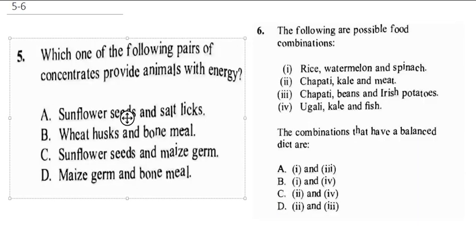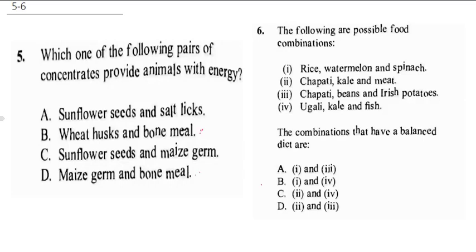Question 5 says: which one of the following pairs of concentrates provides animals with energy? Bone meal is not for energy, so bone meal is out — it's in B and D. Salt licks are not for energy; they're more for minerals. Maize, jam, and sunflower seeds are the ones that provide energy for the animals. So the correct answer is option C.